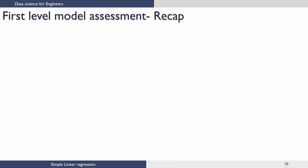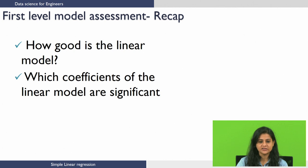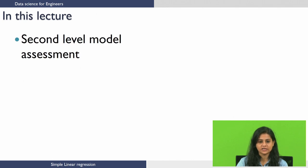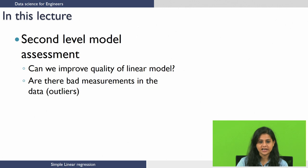Welcome to the third lecture on implementation of simple linear regression using R. In the last lecture, we looked at the first level of model assessment. We saw how good the linear model we built was, and we also saw how to identify the significant coefficients in the linear model. In this lecture, we are going to look at the second level of model assessment. As part of this, we are going to see if we can improve the quality of the linear model and identify bad measurements — that is, outliers.